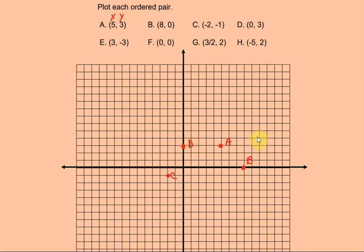Point E is at 3, negative 3. Starting at 0, I go to the right 3 — 1, 2, 3 — and then negative 3 means I go down 1, 2, 3 spaces to that spot. That is point E.